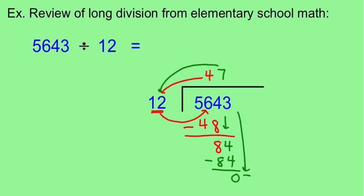Now we bring down the next number 3. That doesn't work. So this is your remainder. It doesn't give you an exact answer, so we have 47 remainder 3.